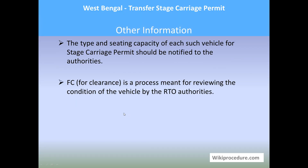Other information: the type and seating capacity of each vehicle for stage carriage permit should be notified to the authorities. FC for permits is a process meant for reviewing the condition of the vehicle by the RTO authorities. We hope this video helped you. Don't forget to click like and subscribe to our channel for more such videos. Thank you for visiting wikiprocedure.com to know how to transfer stage carriage permit in West Bengal.